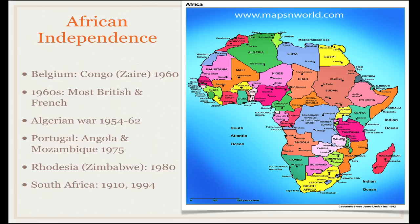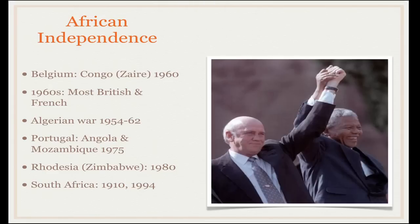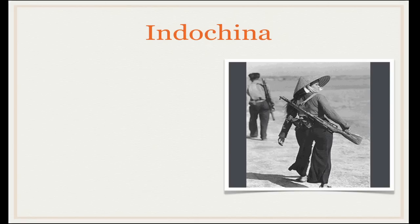South Africa achieved its independence from the British Empire in 1910, but was ruled and dominated by the white settled minority up to 1994, when South Africa effectively became a democracy. There is a picture of Nelson Mandela, the leader of the ANC movement, who came to power when South Africa became a democracy in 1994.